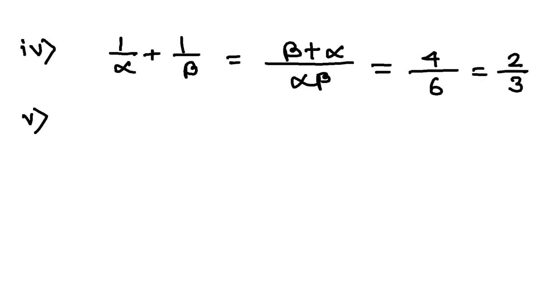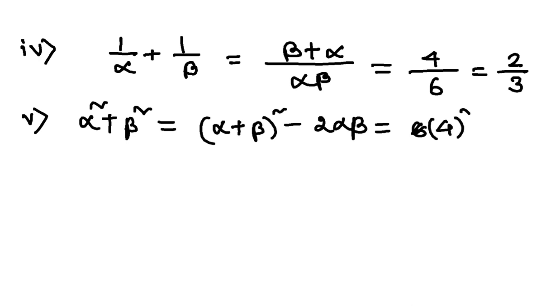Next, number five, alpha squared plus beta squared. Now, how to evaluate this one? See, we know the value of alpha plus beta and alpha beta. So alpha squared plus beta squared is alpha plus beta whole squared minus 2 alpha beta. So this will give us 4 squared minus 2 into 6. So 4 squared is 16, 2 into 6 is 12, 16 minus 12 is 4.